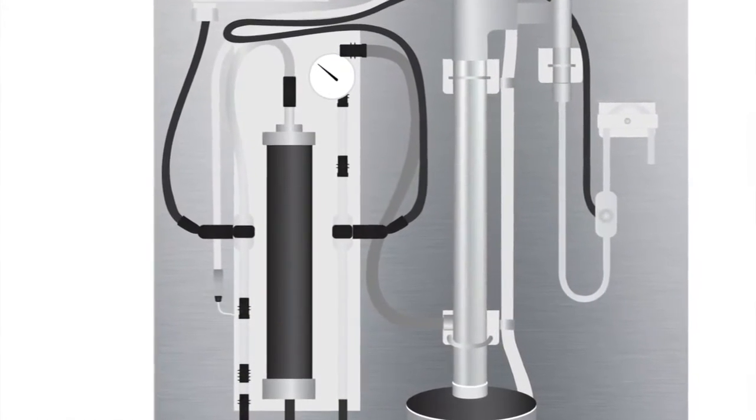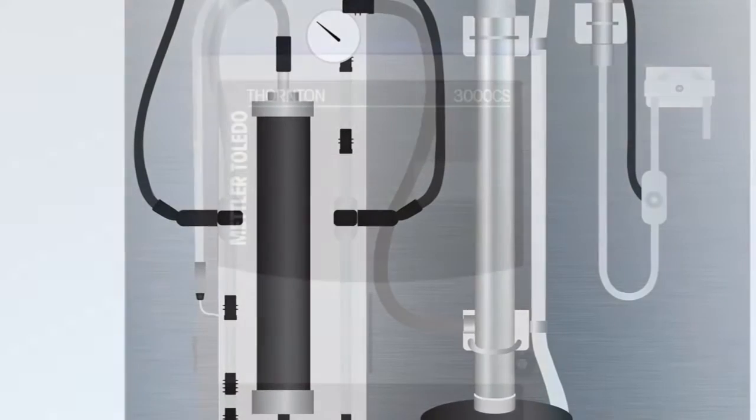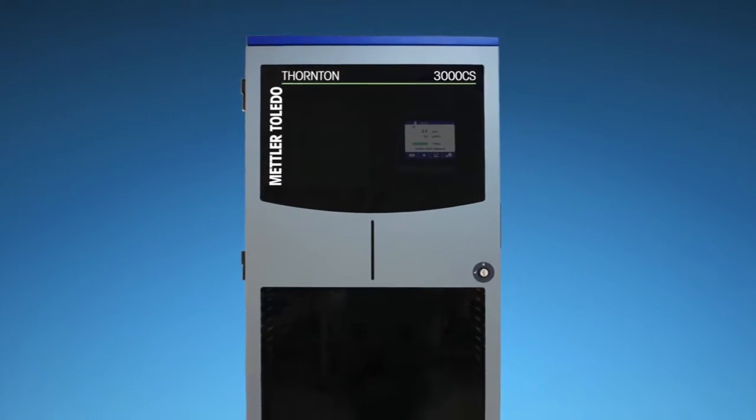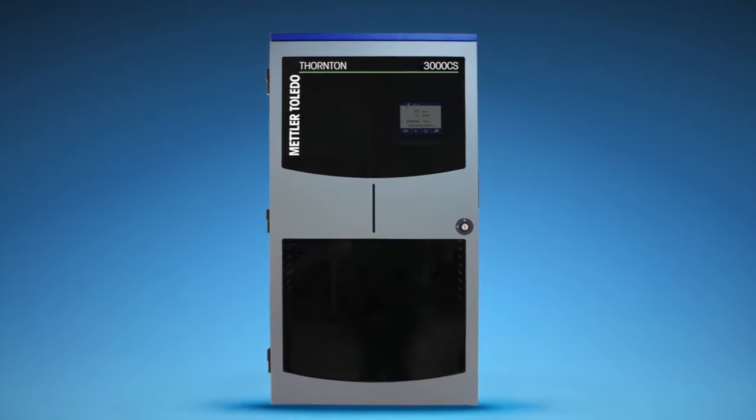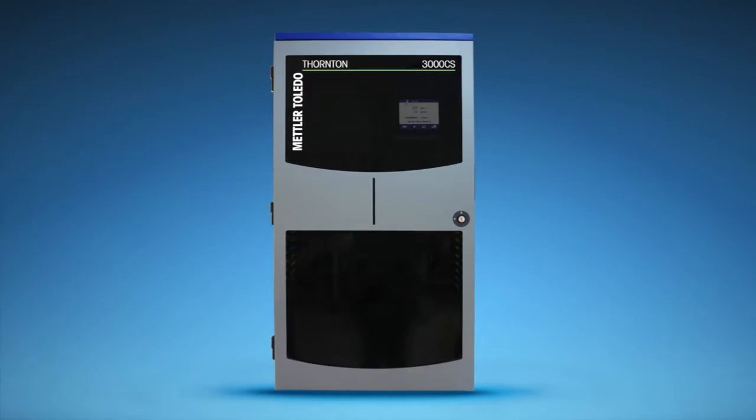Mettler Toledo Thornton's new 3000 CS Analyzer provides the answer. By offering online measurement of chloride and sulfate ions at ppb levels, the 3000 CS Analyzer allows you to monitor these contaminants continuously.